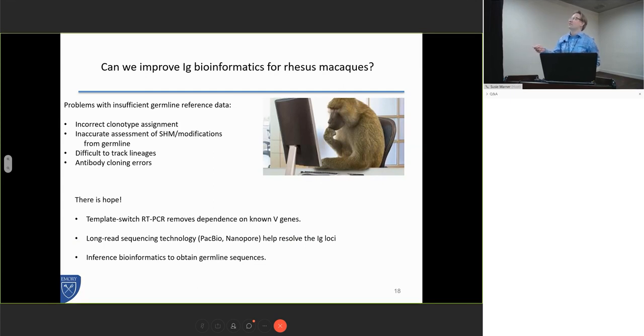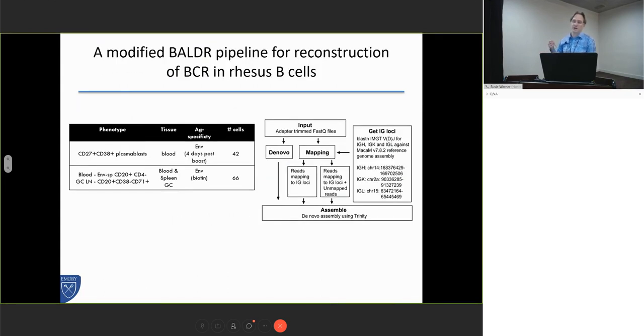There is hope, and it's not named Tom, although he's here. We can use templates with template switch oligo PCR to be able to remove dependence on pulling out antibodies based on known V genes. Then long read sequencing technologies has really helped to resolve the loci, and there are a number of novel bioinformatics techniques for us to infer germline sequences to start to do our work in the absence of a genome.